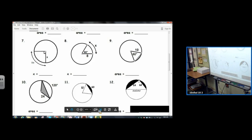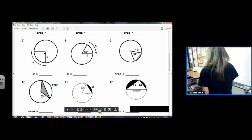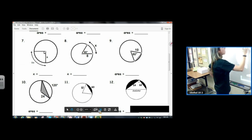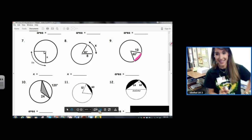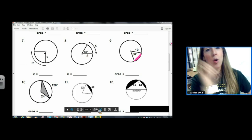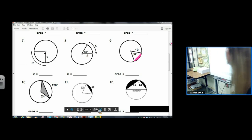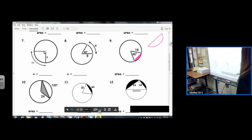All right, so we're looking at the homework from arc length and area of a sector. We're going to look at number nine. Number nine is called a segment of a circle. It's the area subtended by a chord and an arc—it's the area created when you have a chord and an arc. It's called a segment of a circle.